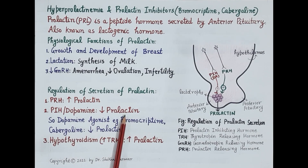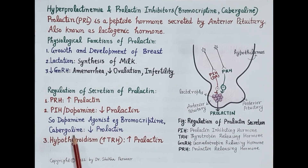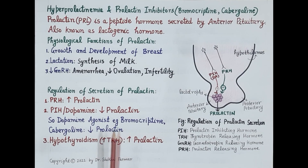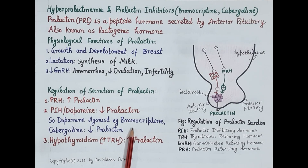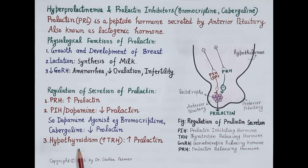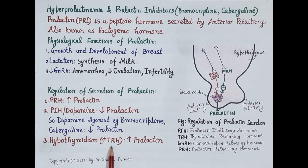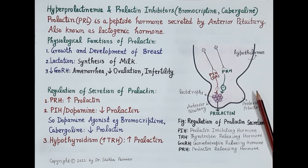Since dopamine reduces levels of prolactin, dopamine agonists like bromocriptine and cabergoline also reduce blood prolactin levels, and these drugs are called prolactin inhibitors used in the treatment of hyperprolactinemia. Another very important point: hypothyroidism, that is reduced functioning of the thyroid gland, increases the secretion of TRH, thyrotropin releasing hormone, from the hypothalamus. TRH increases secretion of prolactin, so hypothyroidism can also cause hyperprolactinemia.